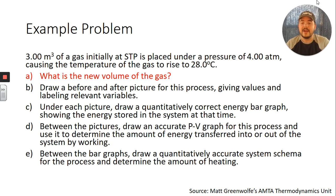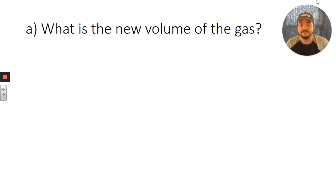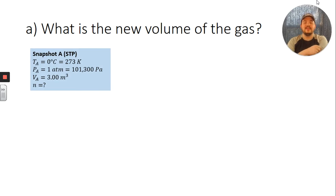So part a, what is the new volume of the gas? I'll start there. I like to get my thoughts organized first, write down the variables in lists, separate out which is from state a or snapshot a, our initial snapshot, which are from state b or snapshot b, our final snapshot. So snapshot a at STP: our temperature is zero degrees Celsius or 273 Kelvin, our pressure is one atmosphere or 101,300 pascals, our volume is three cubic meters, we don't know how many moles of gas we have.